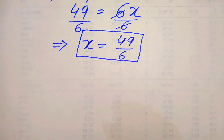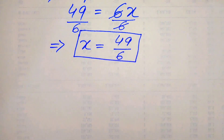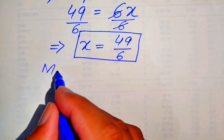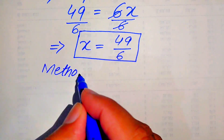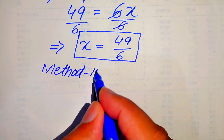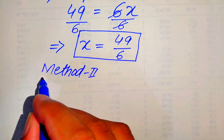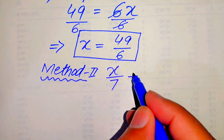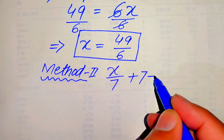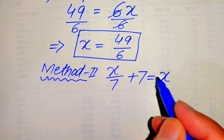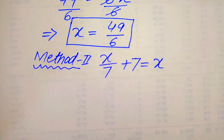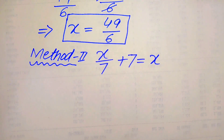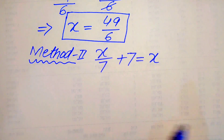Now we solve this problem using the second method. We copy down the given question statement: x over 7 plus 7 equals x. In the second method we use the cross-multiplication method.